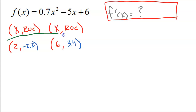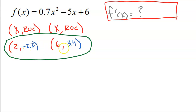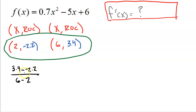I know the relationship between the x's and the rates of change is linear, because that's what we know about quadratic functions — the rate of change changes at a linear rate. So I need to create a linear equation connecting these two points. I need a slope: the rate of change of my rates of change. Taking 3.4 minus negative 2.2, divided by 6 minus 2, gives me 5.6 divided by 4, which equals 1.4. So 1.4 is the rate at which my rates of change are changing.